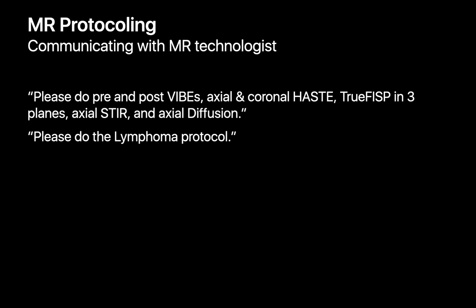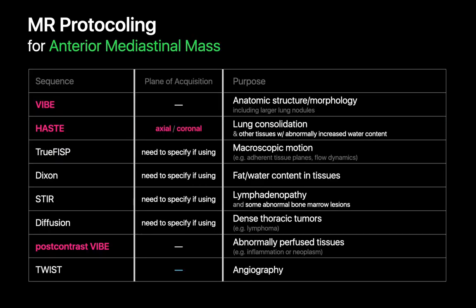Commonly used MRI protocols are packaged and named so you can communicate all the sequences you need by just saying 'lymphoma protocol' rather than listing a litany of sequences. For anterior mediastinal masses, since many are lymphoma, it makes sense to build off the lymphoma protocol. But another common differential is mass-like thymic hyperplasia. Diagnosing thymic hyperplasia requires finding evidence of microscopic fat in the mass — a task Dixon method chemical shift imaging is good at. So for an anterior mediastinal mass workup, we'll add an axial Dixon to our protocol.